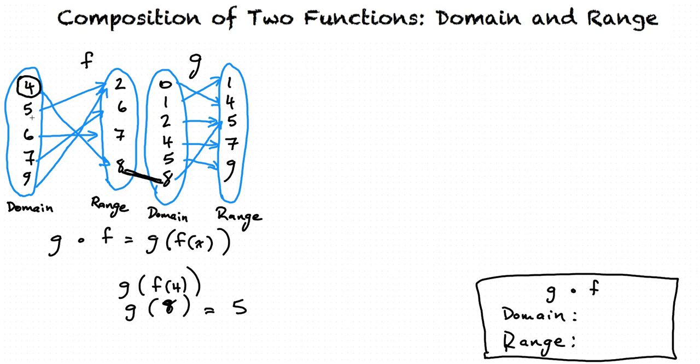Now let's try g of f of 5. f of 5 maps out to 2, so we have g of 2. Now we see, is 2 in the domain of g? Yes it is. So that means 5 is also in the domain.